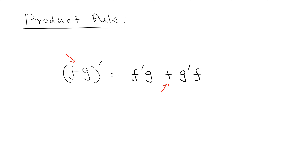You may wonder why there's a plus sign. The reason is: in a product, it doesn't matter which one you write first — like 2 × 3 = 3 × 2. Because you can change the order, there has to be a plus sign. And the benefit is that when you look at the quotient rule, you're going to see the exact same two terms, but now with a minus sign.